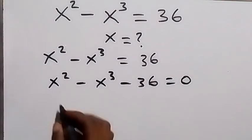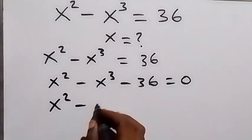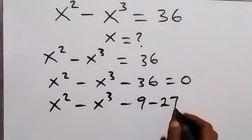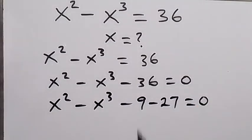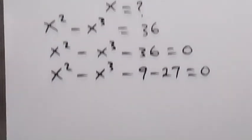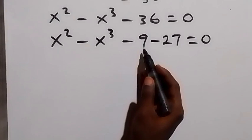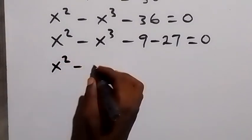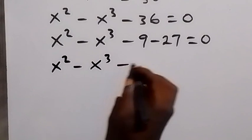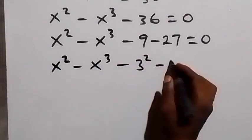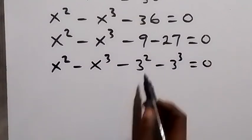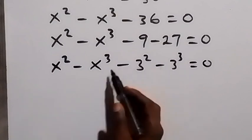From here, let's write minus 36 again as minus 9 minus 27, so we have x squared minus x cubed, and minus 9 minus 27 equals 0. So minus 9 minus 27 gives us minus 36. We can also express 9 and 27 as powers of 3, so this will be x squared minus x cubed minus 3 squared then minus 3 cubed equals 0.